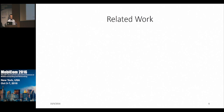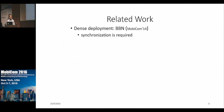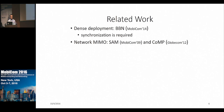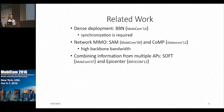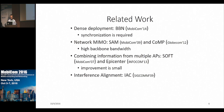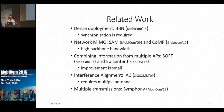There are already some works proposed to handle high uplink throughput. One of them, called BBN, exploits the dense deployment of APs in enterprise networks, but requires synchronization among the APs. Another set of works called Network MIMO — SAM and COMP are examples — requires very high backbone bandwidth because APs need to exchange samples. Works like Soft and Epicenter combine information from multiple APs, but during our experiments we have shown that the improvement using these protocols is very small. Interference alignment and cancellation requires multiple antennas at clients, and Symphony requires multiple transmissions of the same packet, which prevents per-client data rate selection.